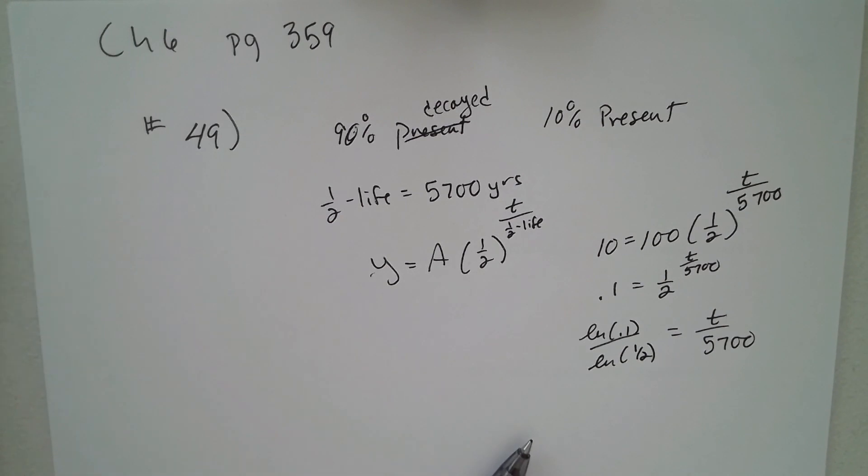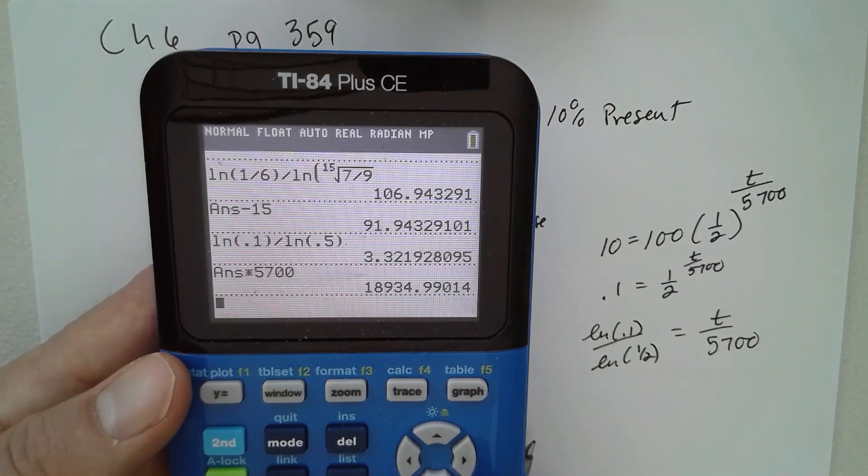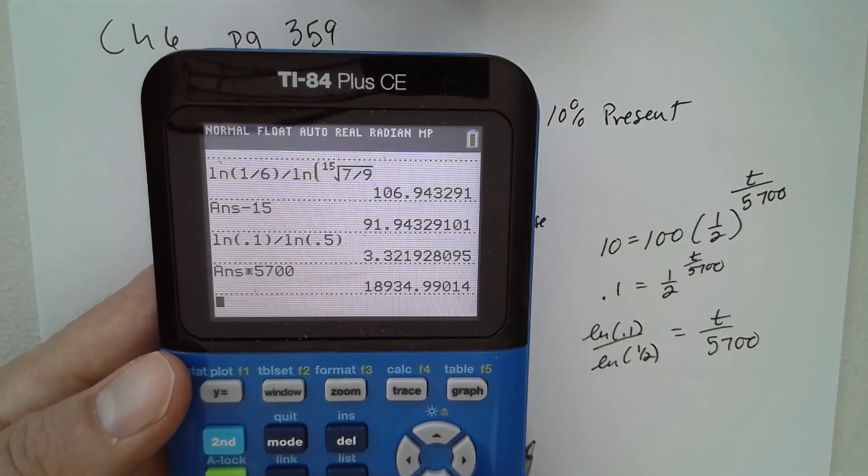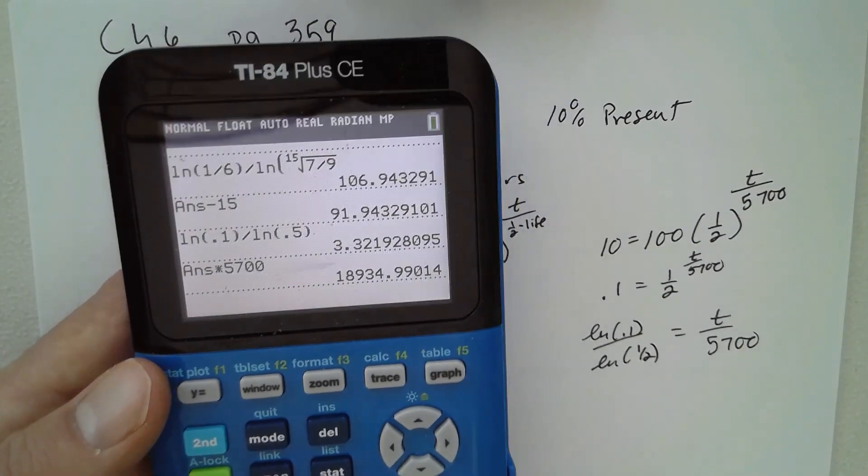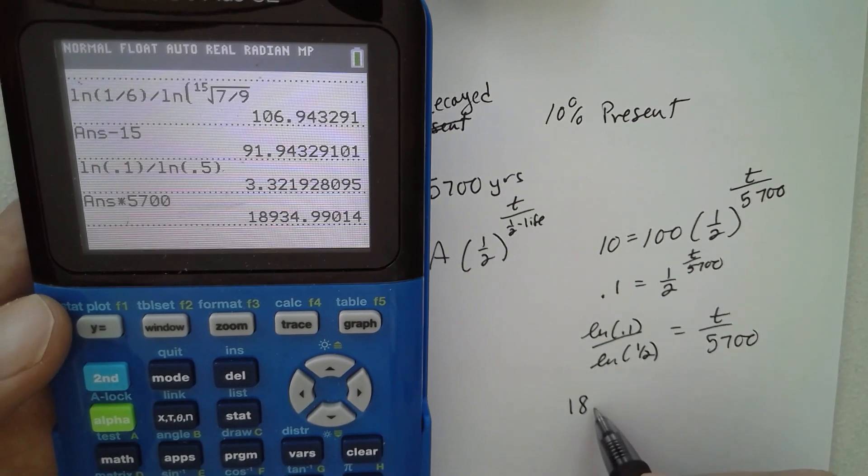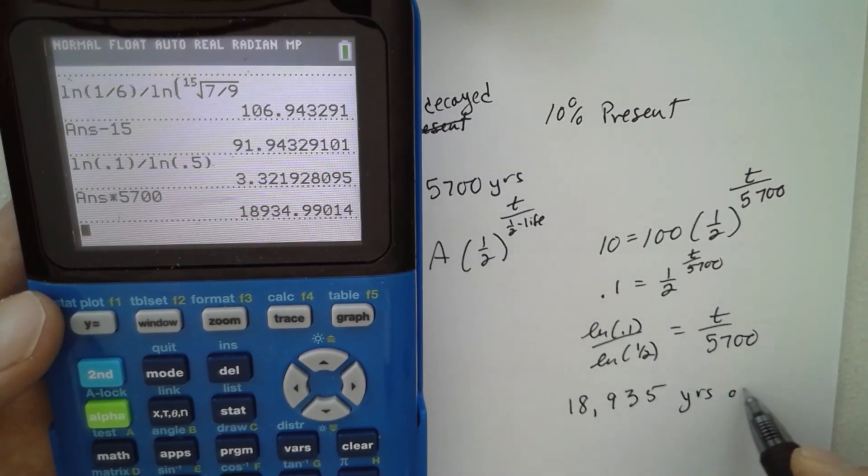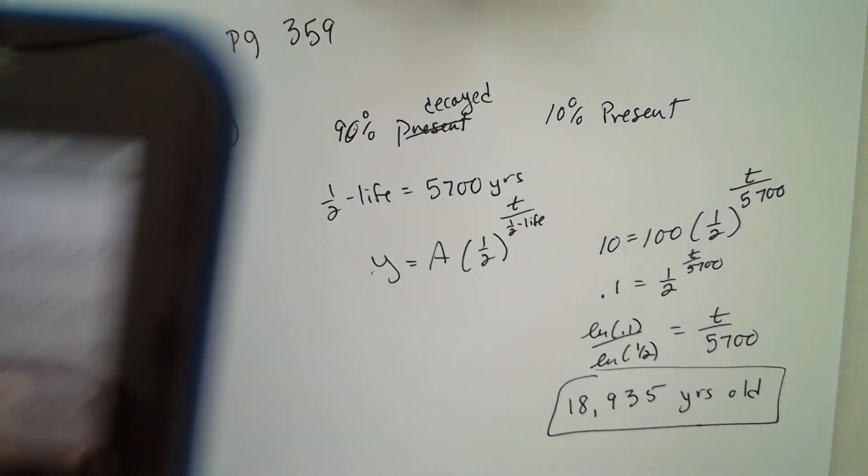Just do that times 5,700, so 18,934. What's the question? What is the age? So it's 18,935 years old. Even older than me.